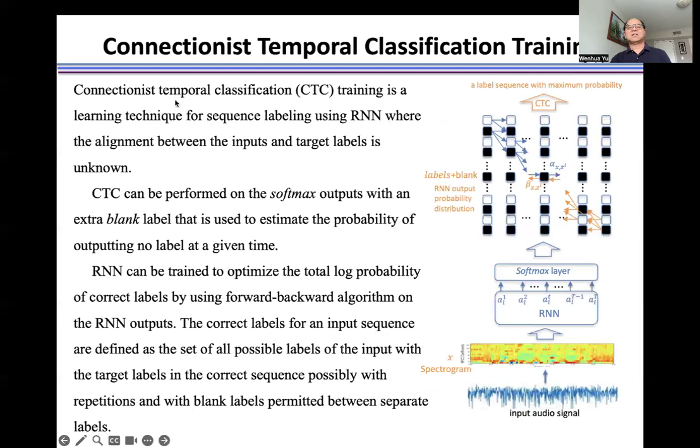Connectionist Temporal Classification (CTC) training is a learning technique for sequence labeling using RNN where the alignment between the input and target labels is unknown. CTC can be performed on the softmax output with an extra blank label that is used to estimate the probability of outputting no label at a given time.